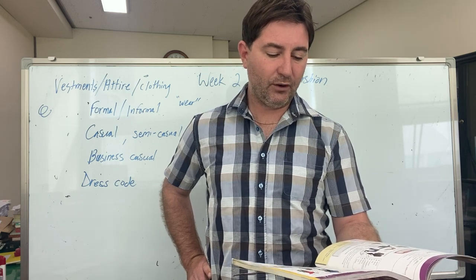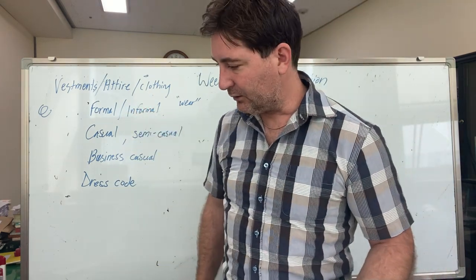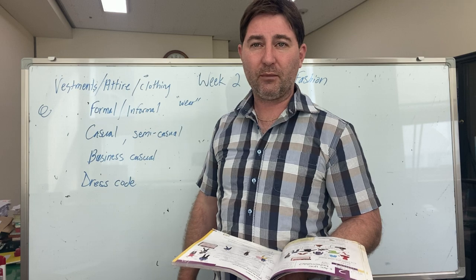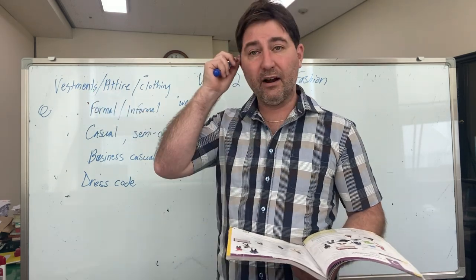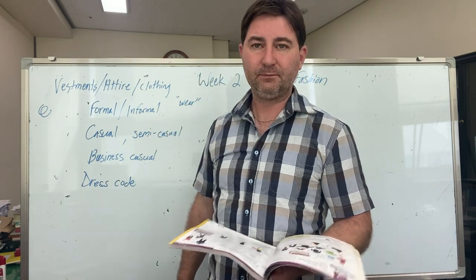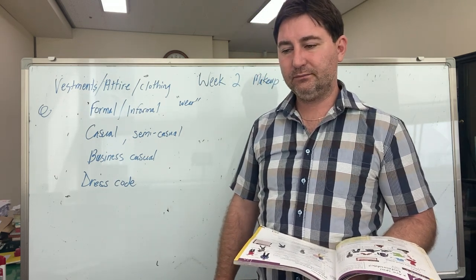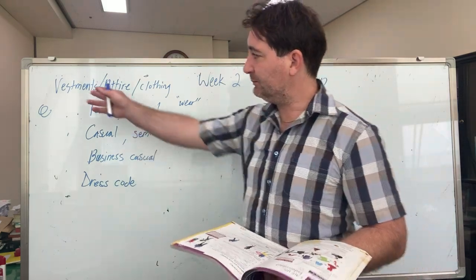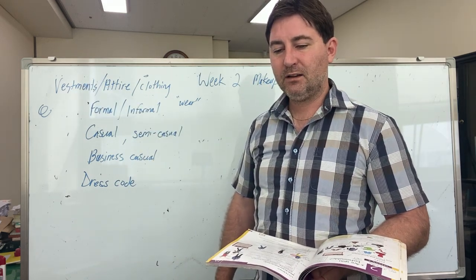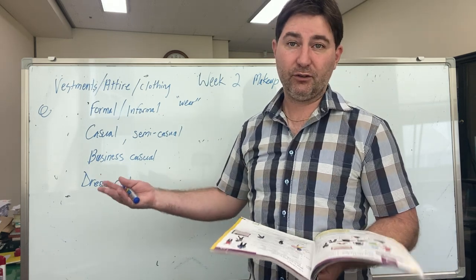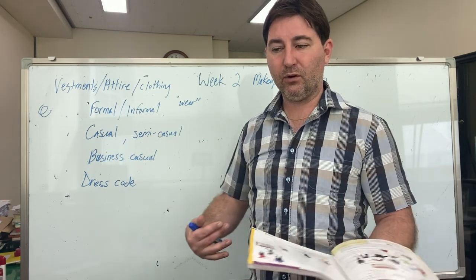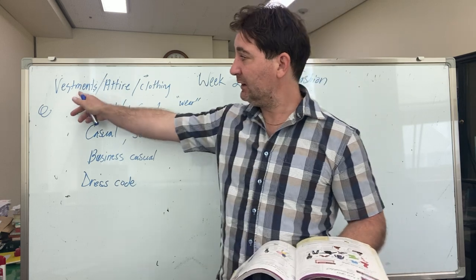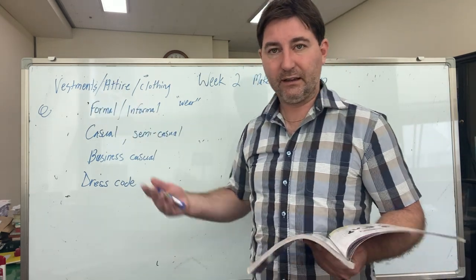The textbook talks about all kinds of different categories of clothing. I wrote a few of them on the board. At the top there are some really formal terms you probably don't come across very often — 'vestments' or 'attire.' A lot of formal language in English comes from French vocabulary. 'Vestments' means almost like ceremonial clothing — in the Catholic Church, a bishop or priest wearing their expensive ceremonial clothing, we call those priestly vestments or holy vestments.